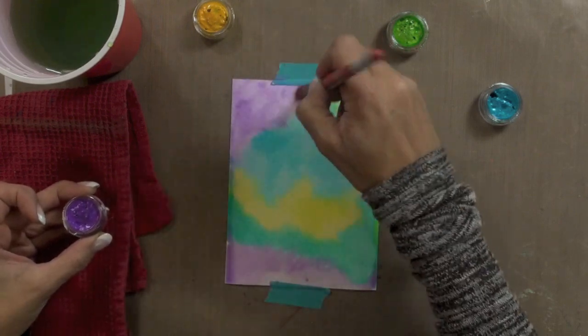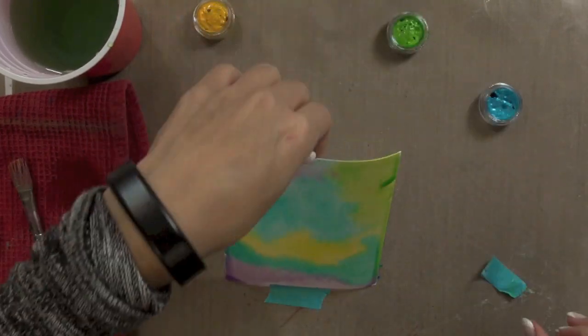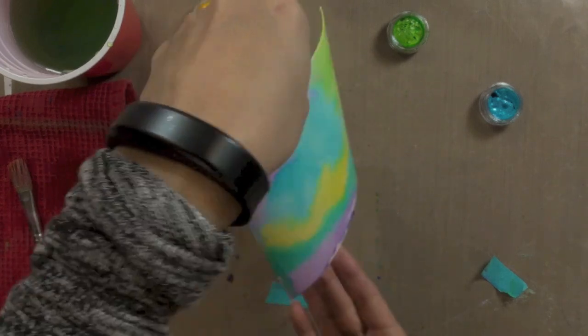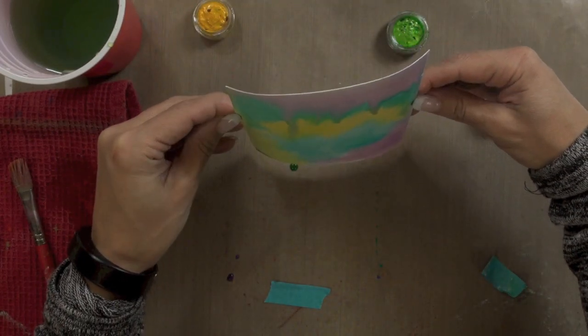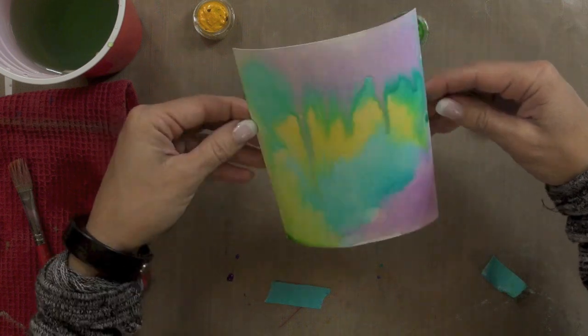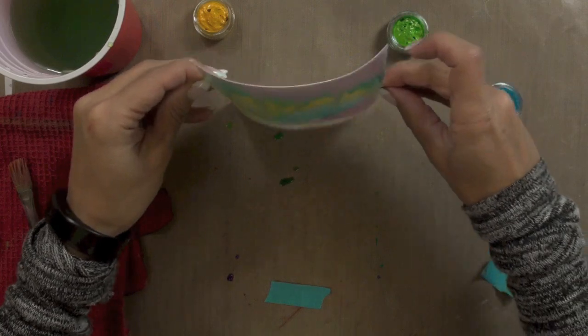Then once I had the entire surface of my watercolor paper covered I removed the tape and then held my piece kind of upright and started tilting it and angling it and then finally I just held it upright like you see there and started letting the colors run down to create that really beautiful blended background.